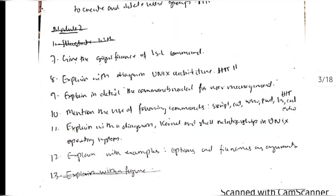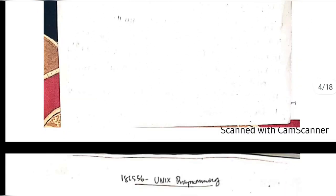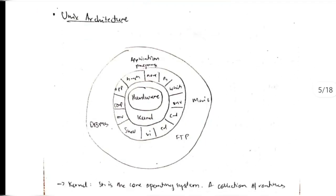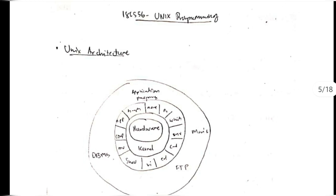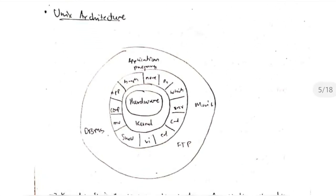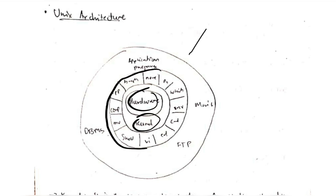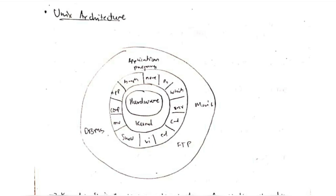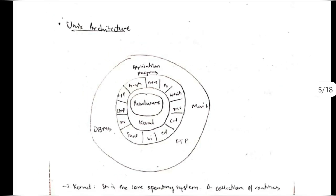These are the previous questions which we will be discussing after the end of this video. We have the Unix architecture — it is an important question from an exam point of view, so you need to know this diagram. In this diagram we have mainly five parts: hardware, kernel, functions you can use, and other external programs. We will be discussing each of these in this module.